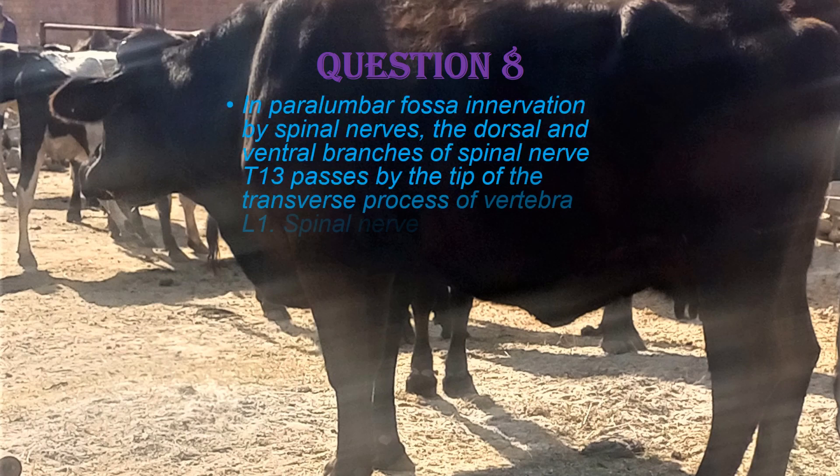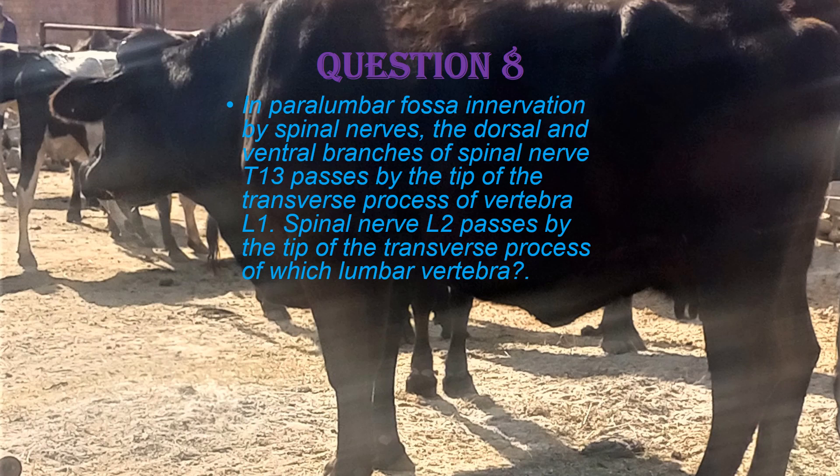Question 8. In paralumbar fossa innervation by spinal nerves, the dorsal and ventral branches of spinal nerve T13 pass by the tip of the transverse process of lumbar vertebra L1. So then, spinal nerve L2 passes by the tip of the transverse process of which lumbar vertebra? The answer is L4. Spinal nerve T13 passes through the tip of L1, and spinal nerve L1 passes through the tip of L2. However, spinal nerve L2 does not pass through the tip of L3 as expected; instead, it passes through the tip of L4. Therefore, if L2 is to be desensitized, one would target the tip of lumbar vertebra L4, not L3.